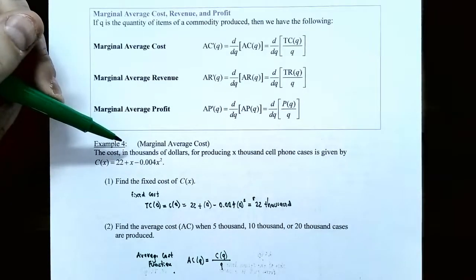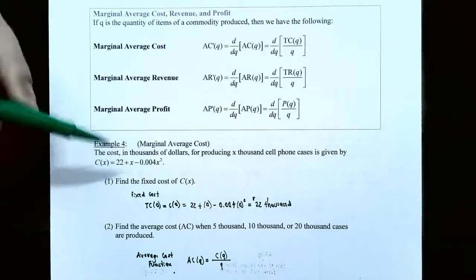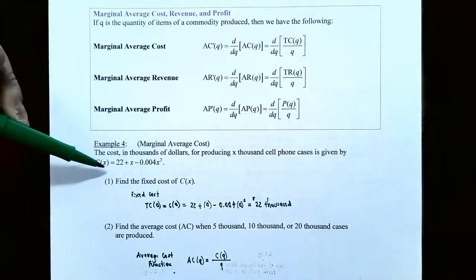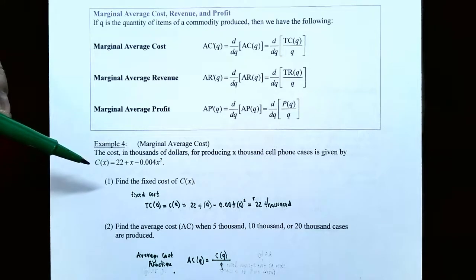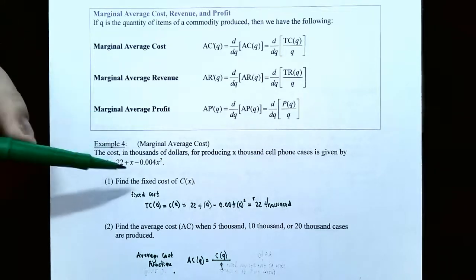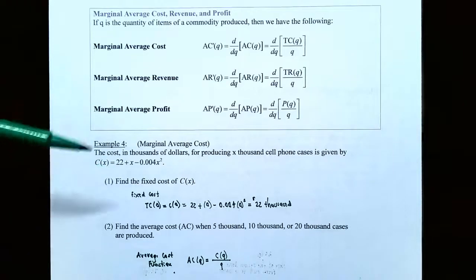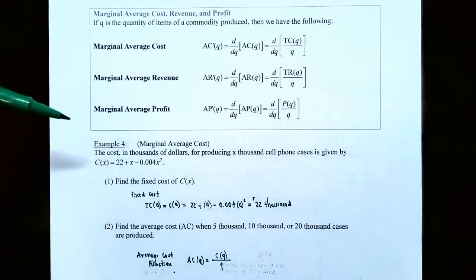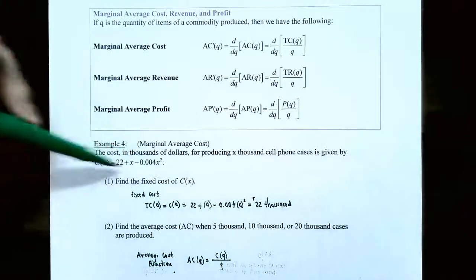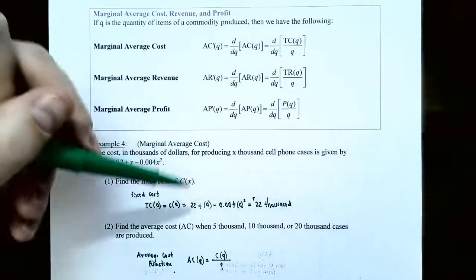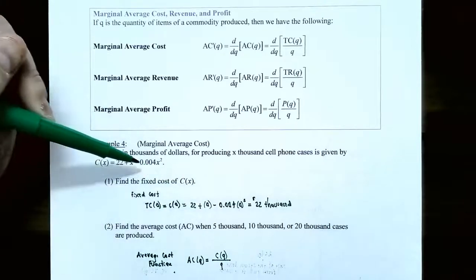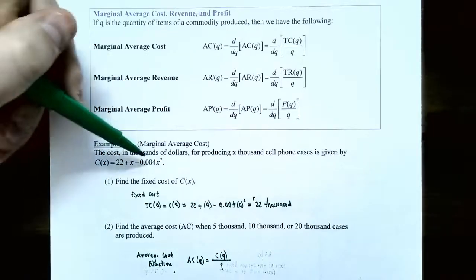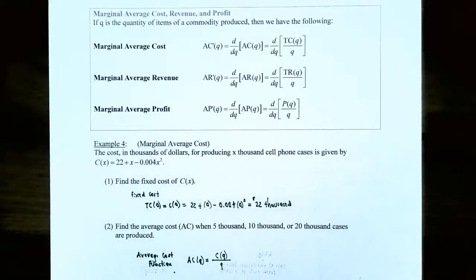Let's look at Example 4: Marginal Average Cost. The cost in thousands of dollars for producing X thousand cell phone cases is C(X) = 22 + X − 0.004X². Part one: find the fixed cost. The fixed cost is the total cost function evaluated at zero units. Replacing all X's with zero gives 22 + 0 − 0 = 22, so the fixed cost is $22,000.